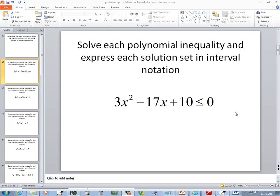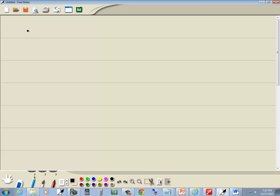In this problem, we want to solve this polynomial inequality: 3x squared minus 17x plus 10 is less than or equal to 0.